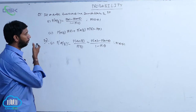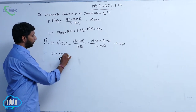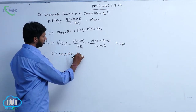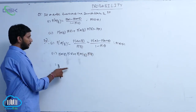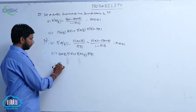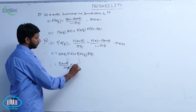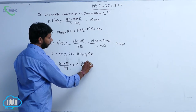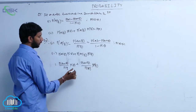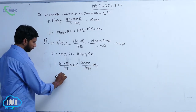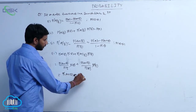It exists only when P of B is not equal to 1. For the second part: P of A given B into P of B plus P of A given B bar into P of B bar. Applying the multiplication theorem, P of A given B is P of A intersection B by P of B, multiplied by P of B, plus P of A intersection B bar by P of B bar, multiplied by P of B bar. Here P of B bar cancels and P of B cancels, giving P of A intersection B plus P of A intersection B bar.